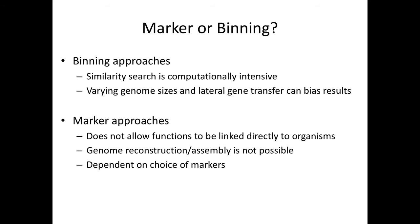Marker gene approaches, in contrast, use either a single well-conserved gene like the 16S, or clade-specific marker genes that act like a barcode for a particular lineage — the same idea as 16S but applied to shotgun metagenomics data. Since you're only looking at individual marker genes, this doesn't tell you about other genes in those genomes. It's highly dependent on your choice of markers, since different lineages can have different biases, and depending on the environment you're studying, clade-specific marker genes might not be well documented.